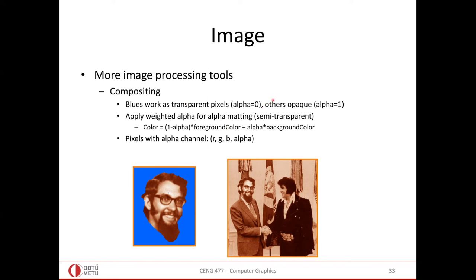In alpha blending, when alpha is zero the pixel is transparent — it is not used, as happens with background regions. When alpha is one the pixel is opaque. We blend the foreground color with the background color using this simple linear operation.